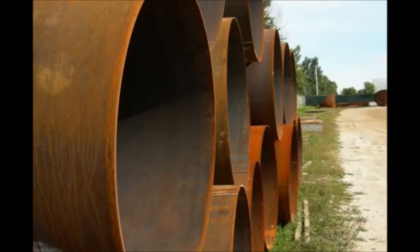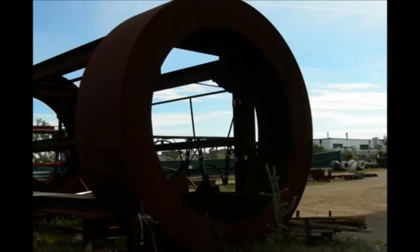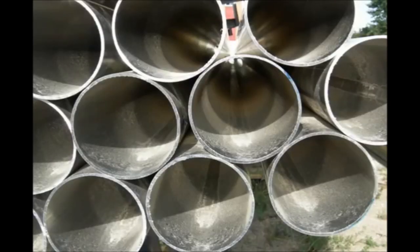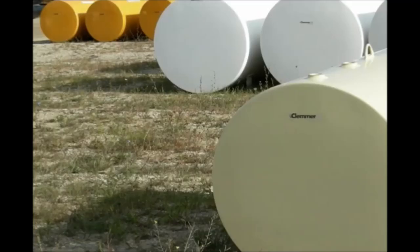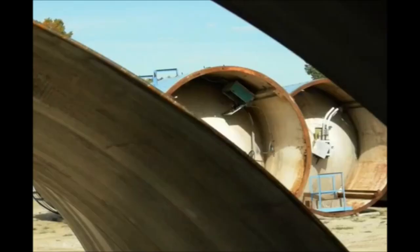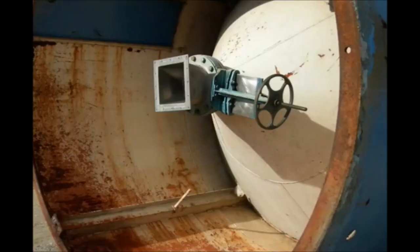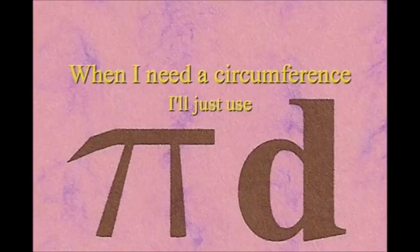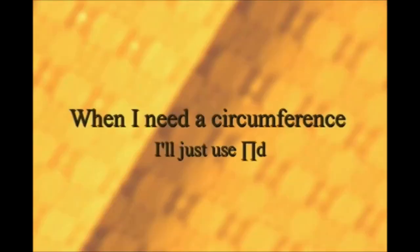Here is a circle, it knows how to get around. It has a radius from center to rim. And its diameter's a line that goes from side to side while passing through the center, now isn't that simple. Pi r squared sounds like area to me, when I need a circumference, I'll just use pi d.